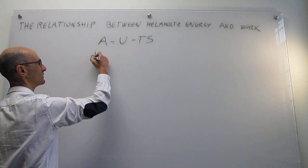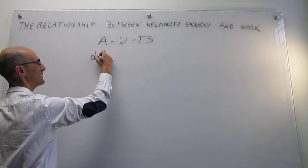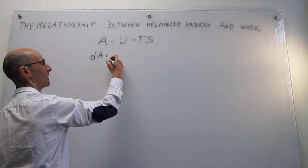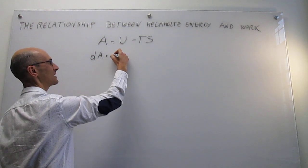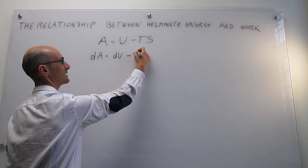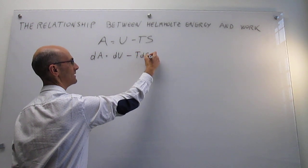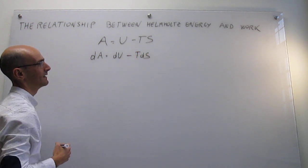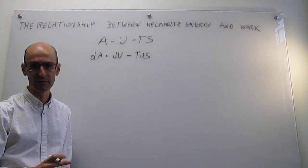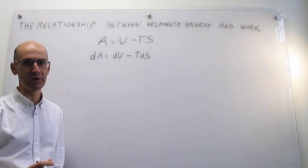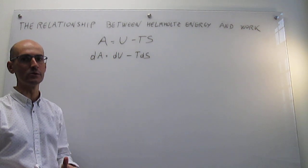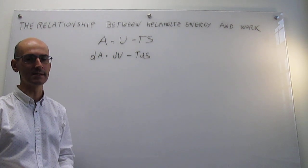Under reversible isothermal conditions, what we'll have is that this is equal to the differential of A — that's the infinitesimal change — the differential of U, and if it's isothermal then this turns into T times the differential of S. Notice that the reversibility of the process here is not obvious yet, but in going from this step to that step, we have assumed that the process is isothermal.